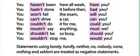We mustn't say anything, must we? The pronoun — I, you, he, she — must agree with the tag question, so there's always a relationship between the statement and the tag. If the statement is 'we,' the tag is 'we.' You shouldn't be so busy, should you? You wouldn't stop me, would you?